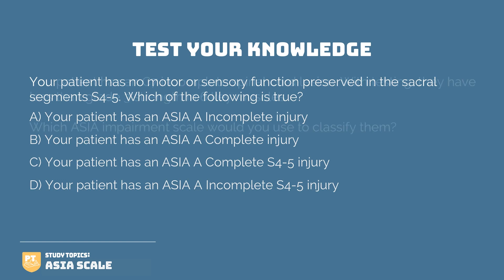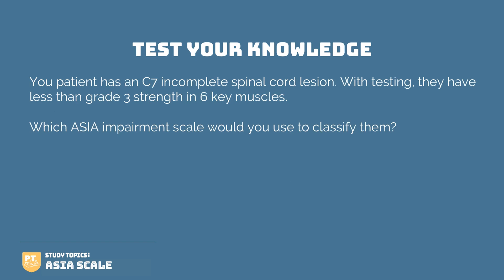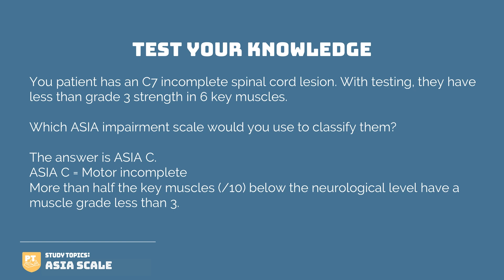Let's do another test. Your patient has a C7 incomplete spinal cord lesion. With testing, they have less than grade three strength in six key muscles. Which ASIA impairment scale would you use to classify them? Remember, with motor testing you are testing 10 key muscles — C5 to T1 and L2 to S1. If there are six muscles less than grade three, that is more than half, which means they are more involved. Therefore, the answer is ASIA C — motor incomplete, with more than half of the key muscles below the neurological level having a muscle grade of less than three.